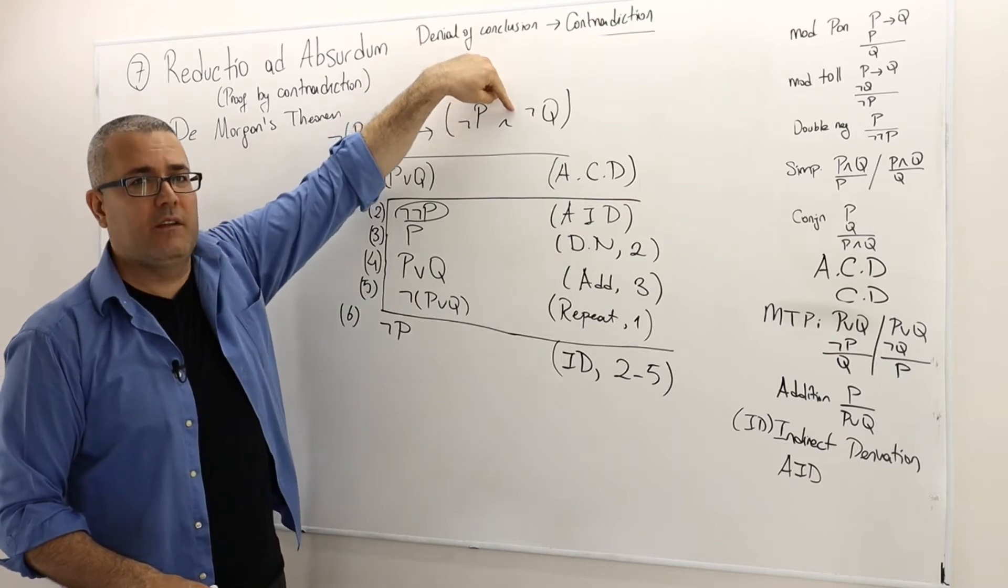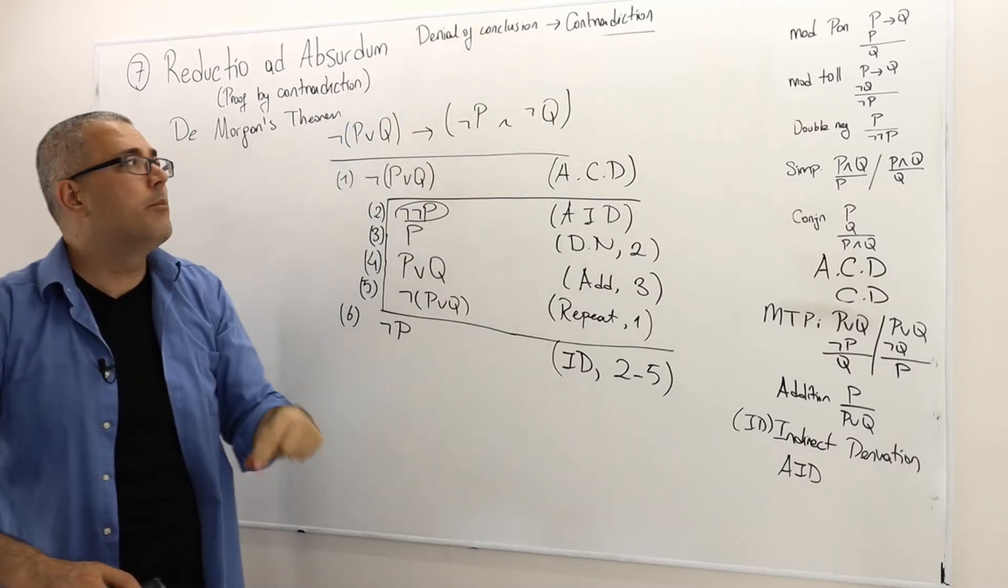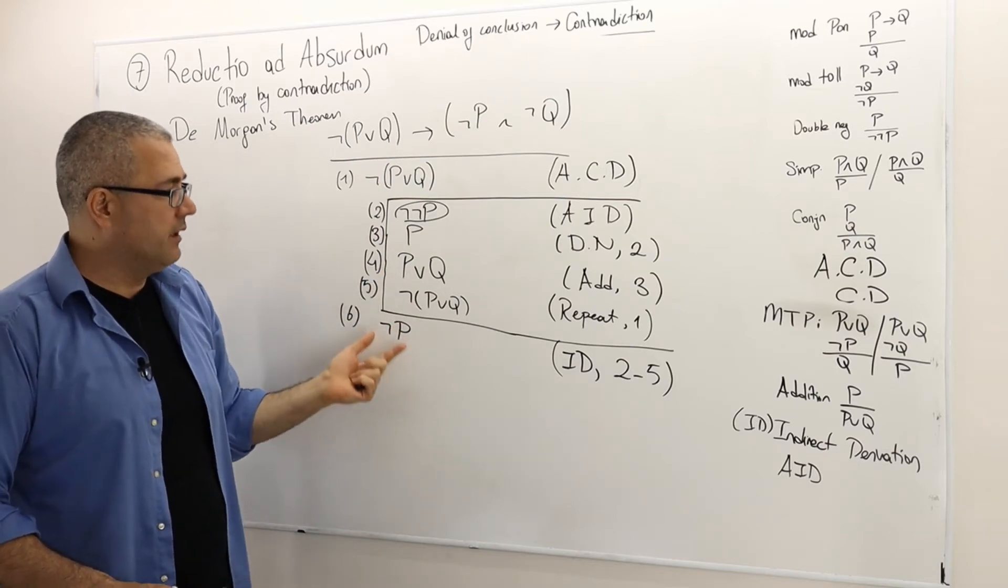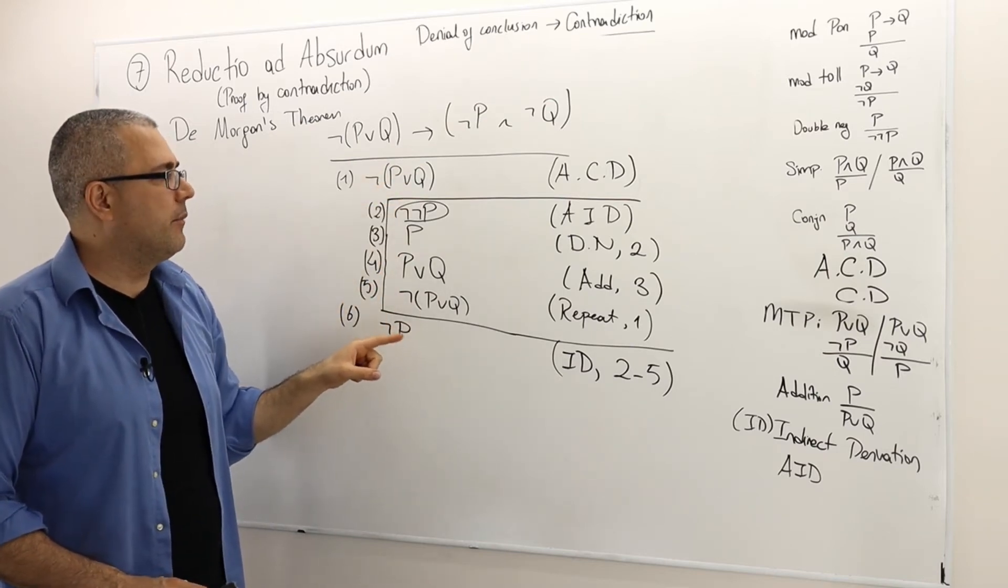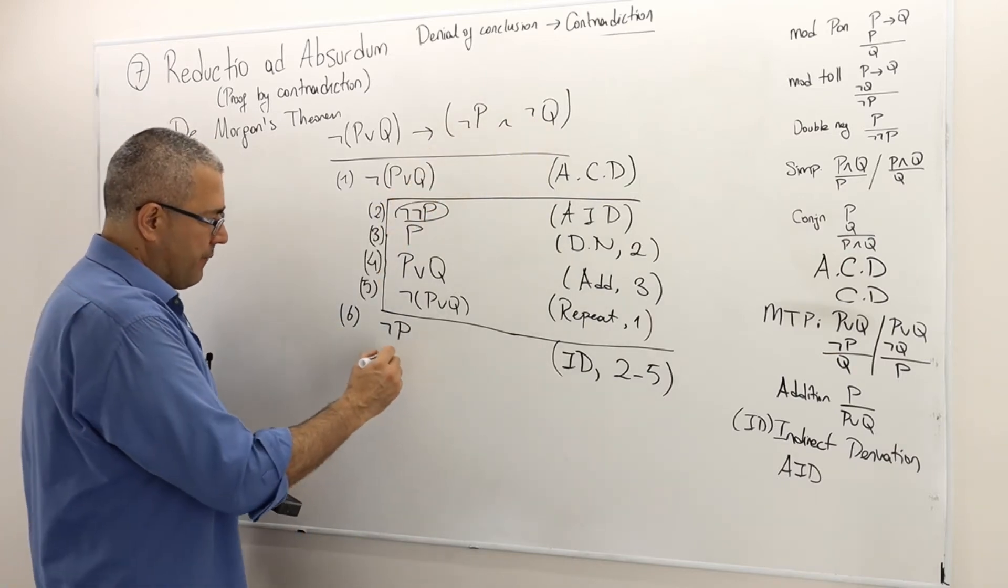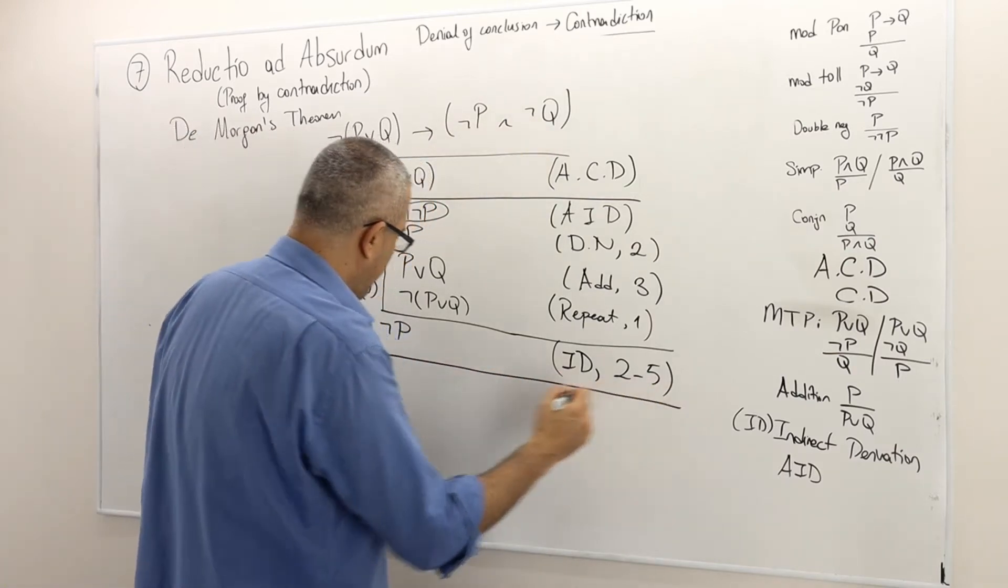But remember, this is and. So I need to prove this part as well. But you know what? The approach is very similar. If I proved not P in this indirect method, I can prove not Q also in an indirect method.